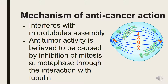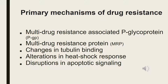Vinorelbine is a cell-cycle-specific drug, which means that it only works on cells that are actively dividing. It is also known as an anti-microtubule agent because of its interaction with tubulin. Vinorelbine prevents the polymerization of tubulin into microtubules, which causes mitosis to stop at metaphase. Once the mitotic spindle becomes dysfunctional, the cell is unable to replicate and the end result is programmed cell death.